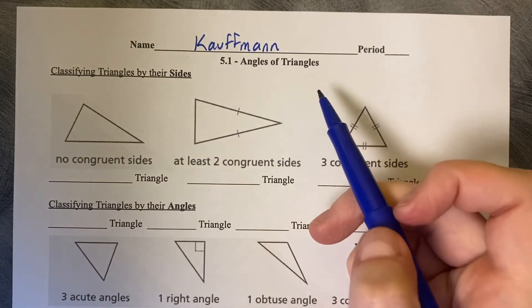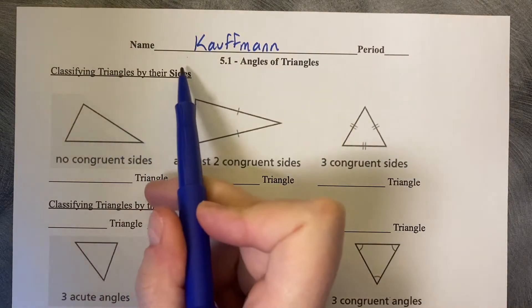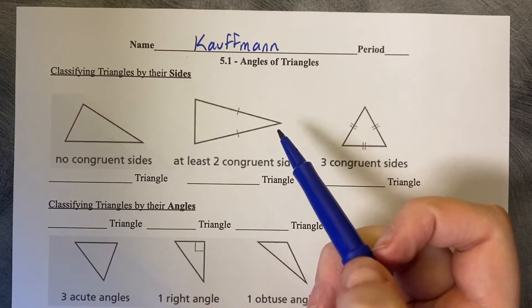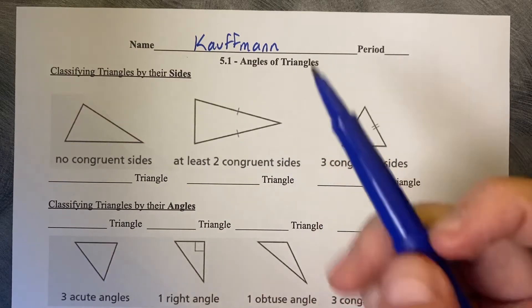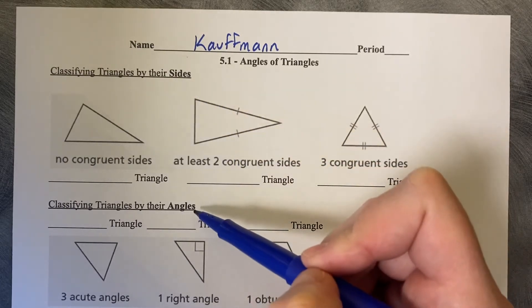5.1 angles of triangles. Classify triangles by their sides because there are two ways to classify angles. There's two parts of their name. You classify it by its type of sides and its type of angles.